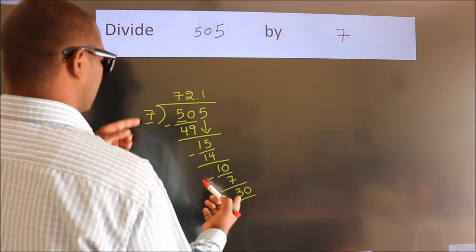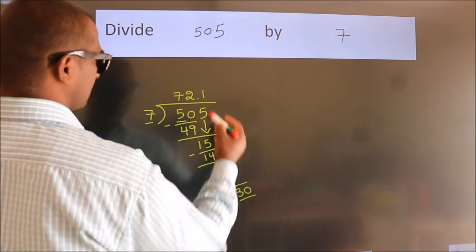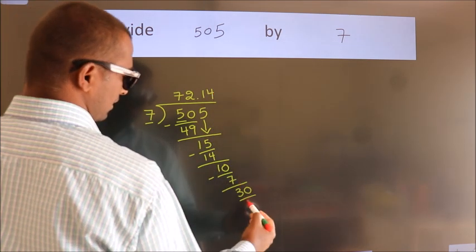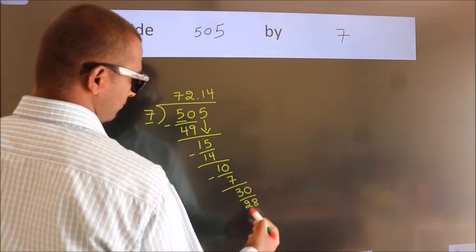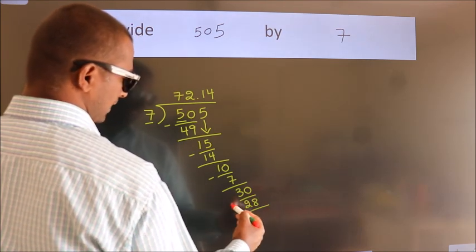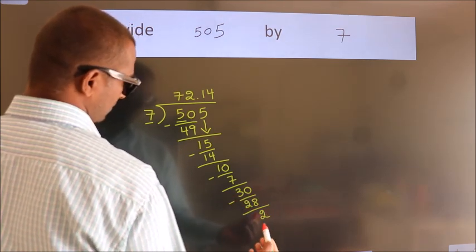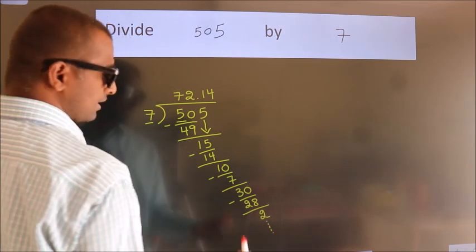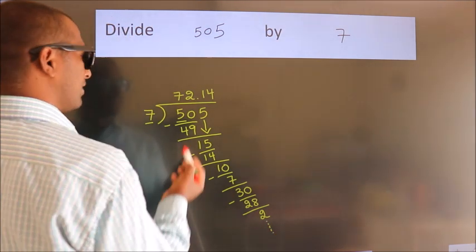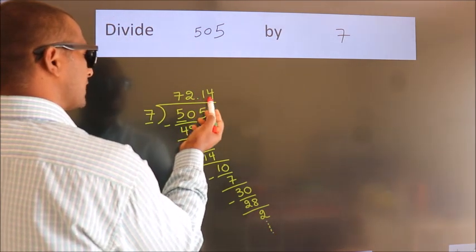A number close to 30 in the 7 table is 7 times 4, which is 28. Now we subtract. We get 2, and the division continues. It is enough if we do up to 2 decimal places.